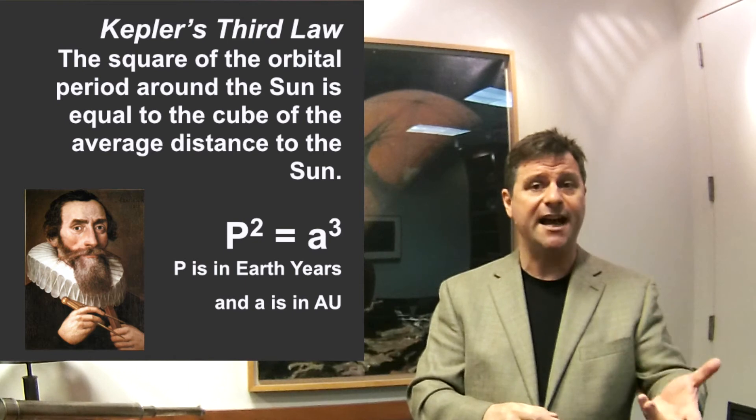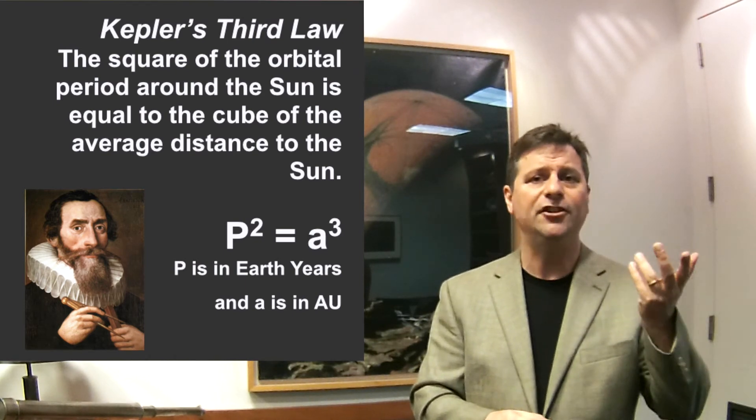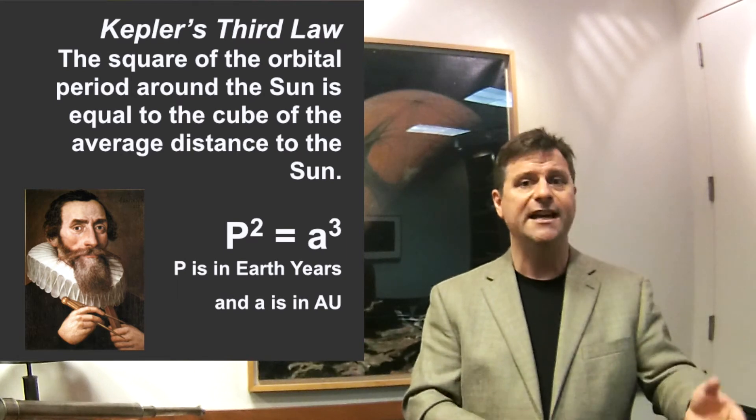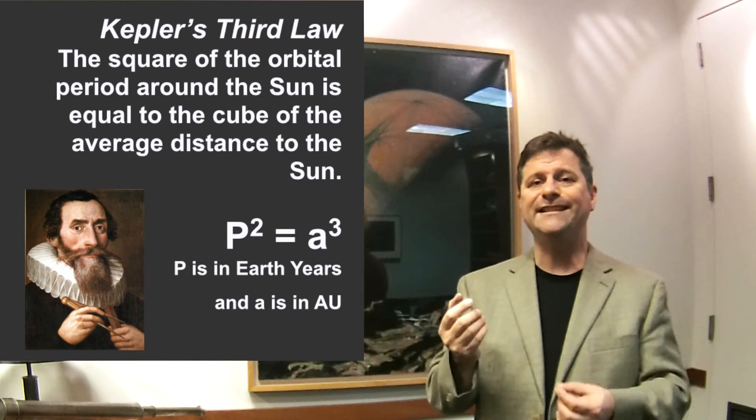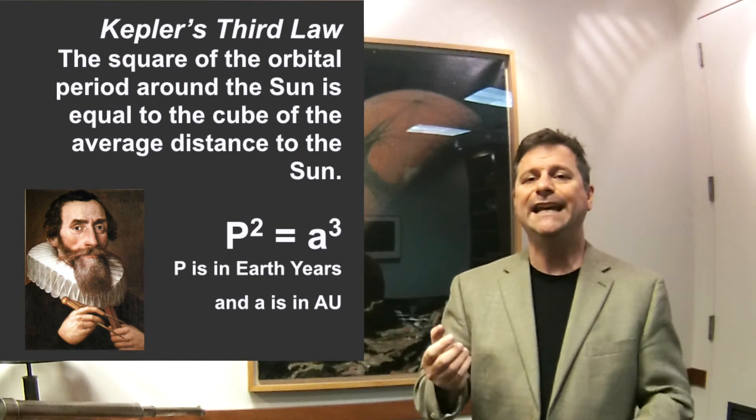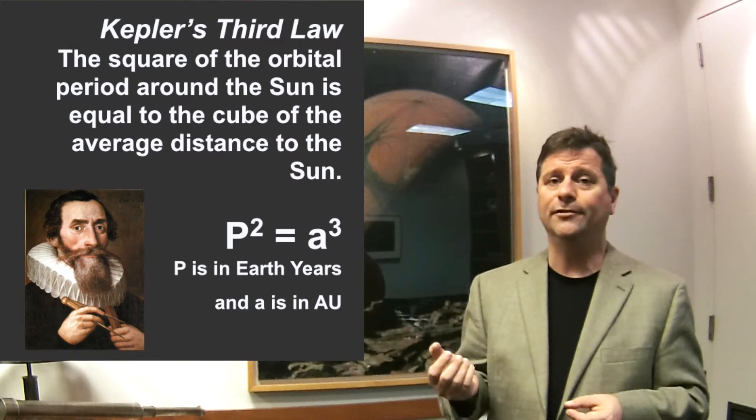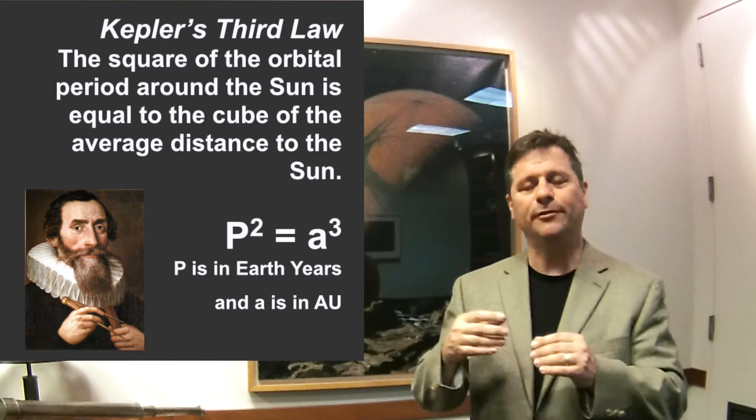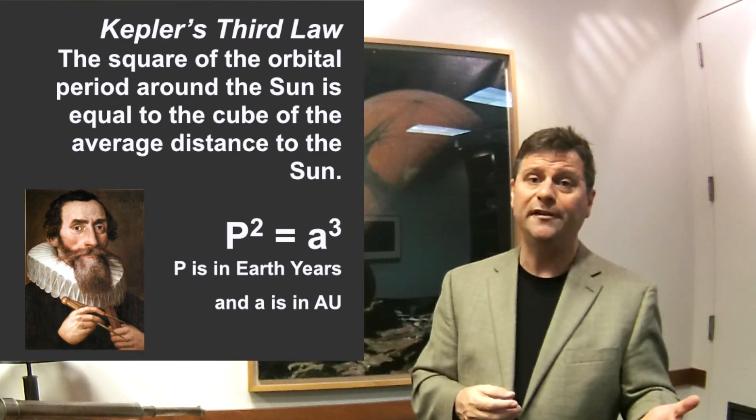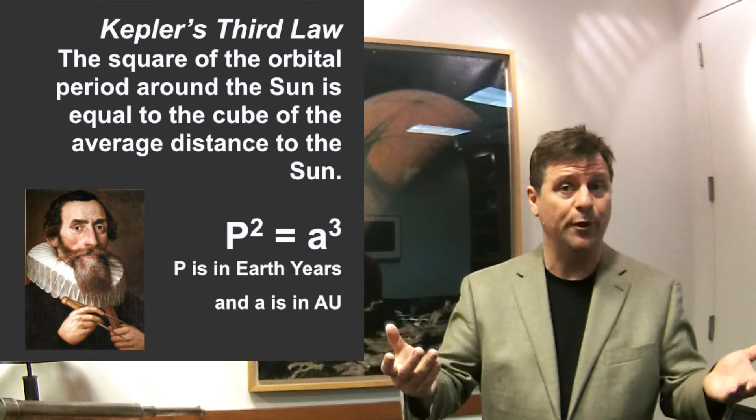So once again, the square of the time it takes the planet to go around the sun in units of Earth years is equal to the cube of the distance to the planet from the sun in Earth-sun distances. And those Earth-sun distances are called astronomical units. So the P squared equals AU, P squared equals A cubed, where P is in Earth years, and A is in AUs. So, of course, that's 1 equals 1 for the Earth.